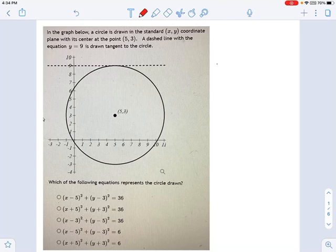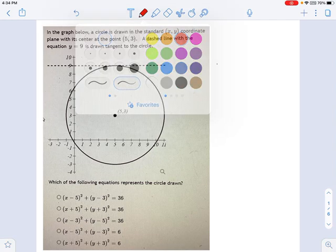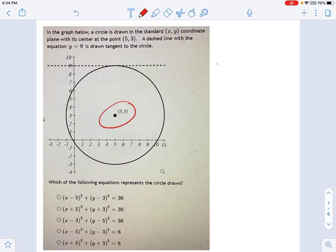We're looking at a circle here in this graph, and what they're telling us is that you have a center at 5, 3. They come out and say that.